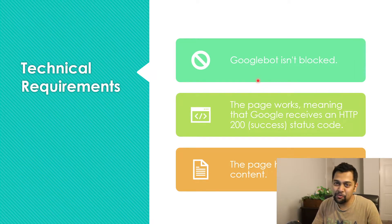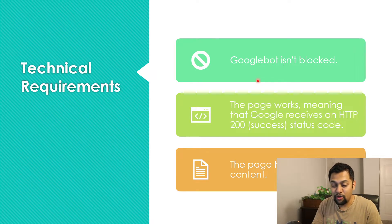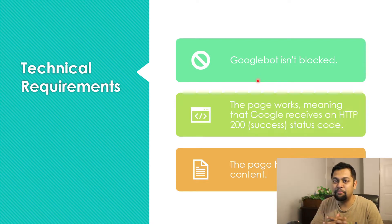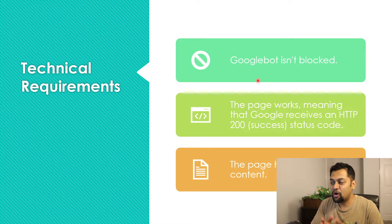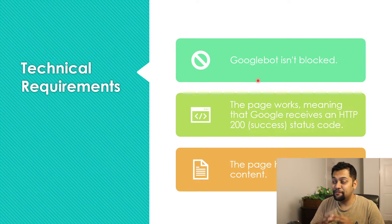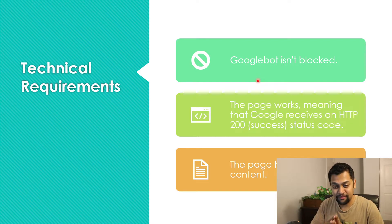The second technical requirement is that the page works — meaning when the crawler hits your website, Google's search engine gets an HTTP 200 response, which basically means the server is responding and they get a response. At bare minimum, the server is functioning and sends back the page content. The third thing is the page has indexable content. Those are the three core technical points, and if you can nail these, you are good in terms of technical SEO.